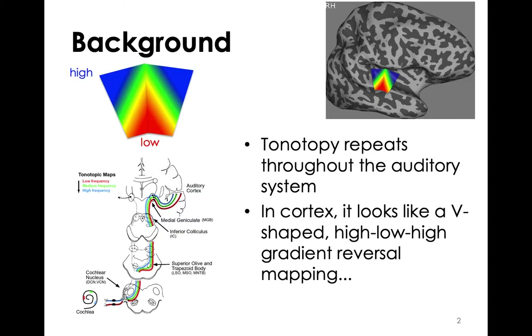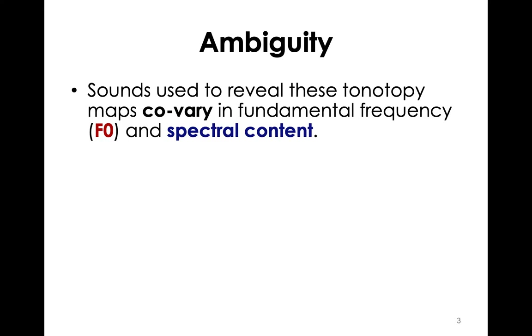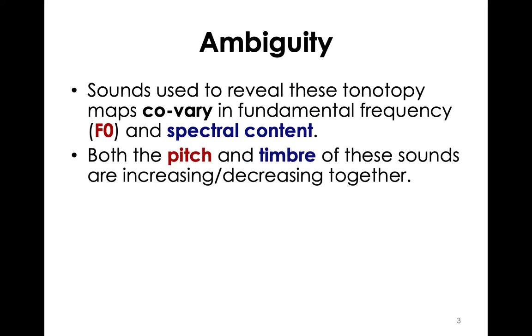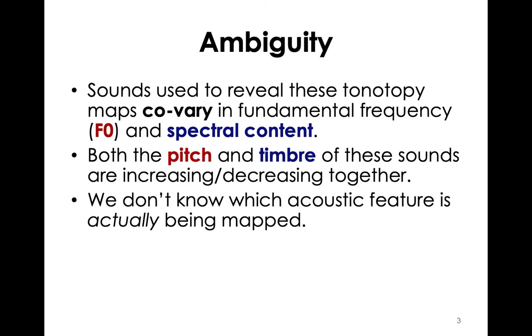In auditory cortex, tonotopy has a well-established V-shaped high to low to high gradient reversal mapping. While it's clear that this tonotopy exists in cortex, what is less clear is whether this tonotopy is purely a reflection of frequency or whether the organizing principle gets converted into something higher level like pitch. The reason for this uncertainty is that there's an ambiguity with the stimuli used to reveal these maps. Sounds traditionally used — pure tones, and even many natural sounds — co-vary in their fundamental frequency and their spectral content. Both the pitch and the timbre of these sounds increase and decrease together, so it's unclear which acoustic feature is actually driving these maps.